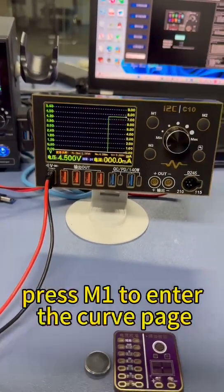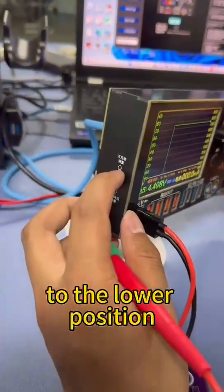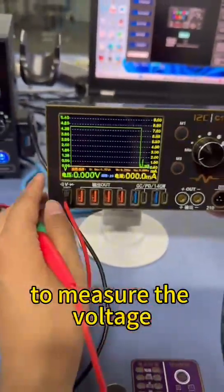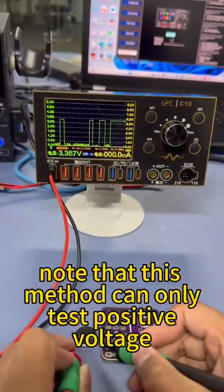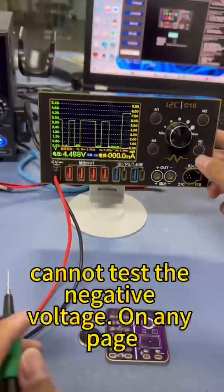Press M1 to enter the curve page. Move the toggle switch on the left to the lower position to measure the voltage. Note that this method can only test positive voltage, cannot test negative voltage on any page.